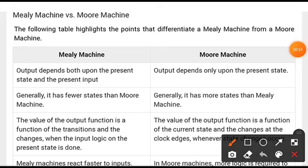In the Mealy machine, the output depends upon both the present state and the present input. But in the Moore machine, the output depends only on the present state.